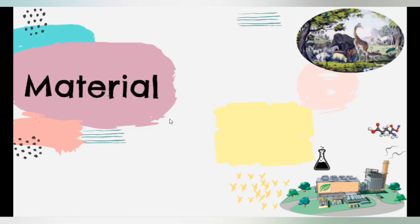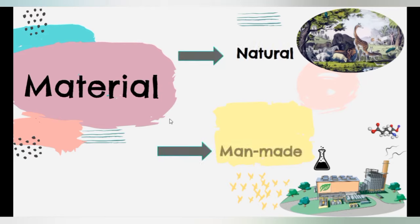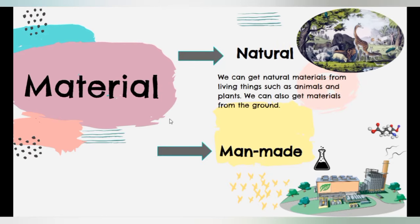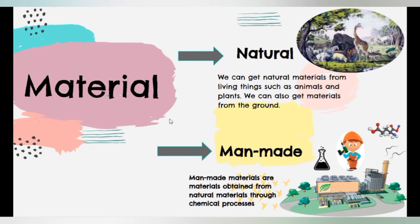We can divide material into natural and man-made. We can get natural materials from living things, such as animals and plants. We can also get materials from the ground. Man-made materials are materials obtained from natural materials through chemical processes.